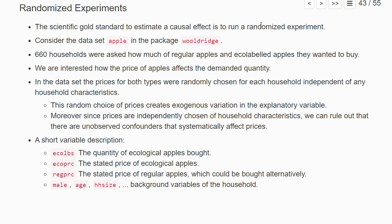We want to look at an example experimental dataset called 'apple' in the wooldridge package. 660 households were asked how much of regular apples and eco-labeled apples they wanted to buy.